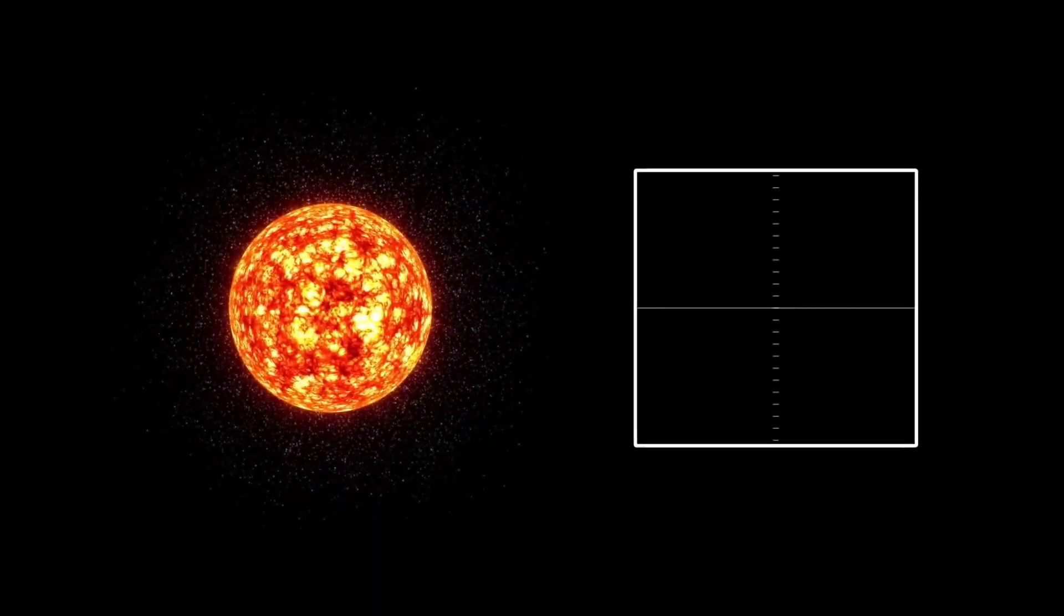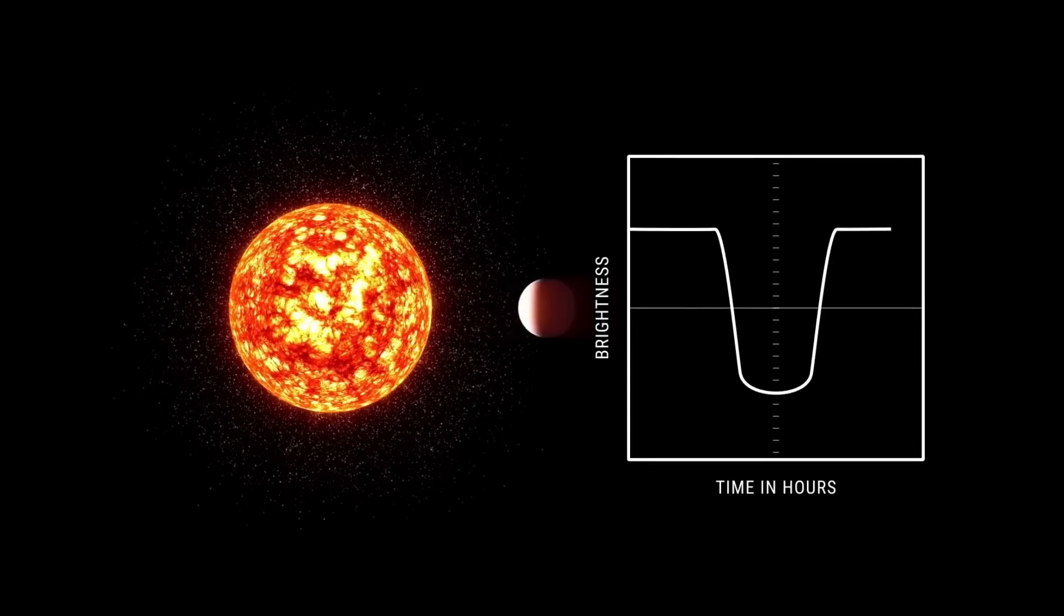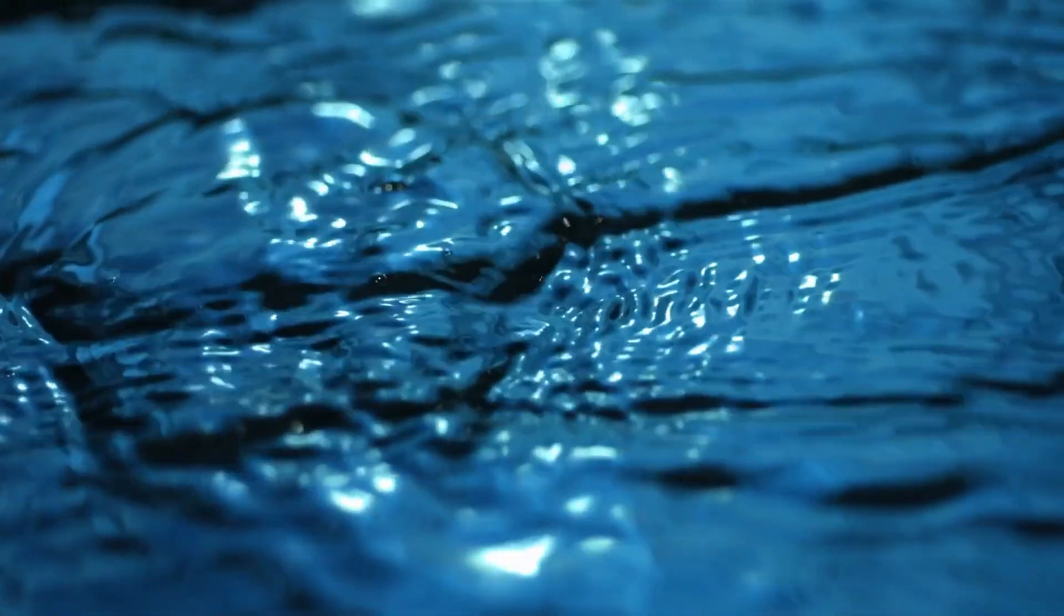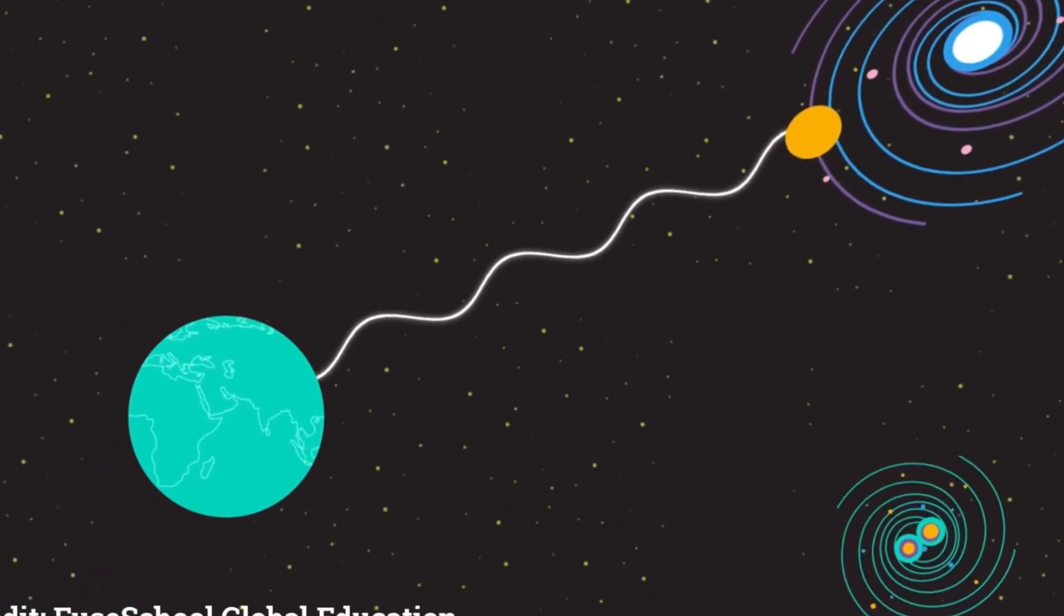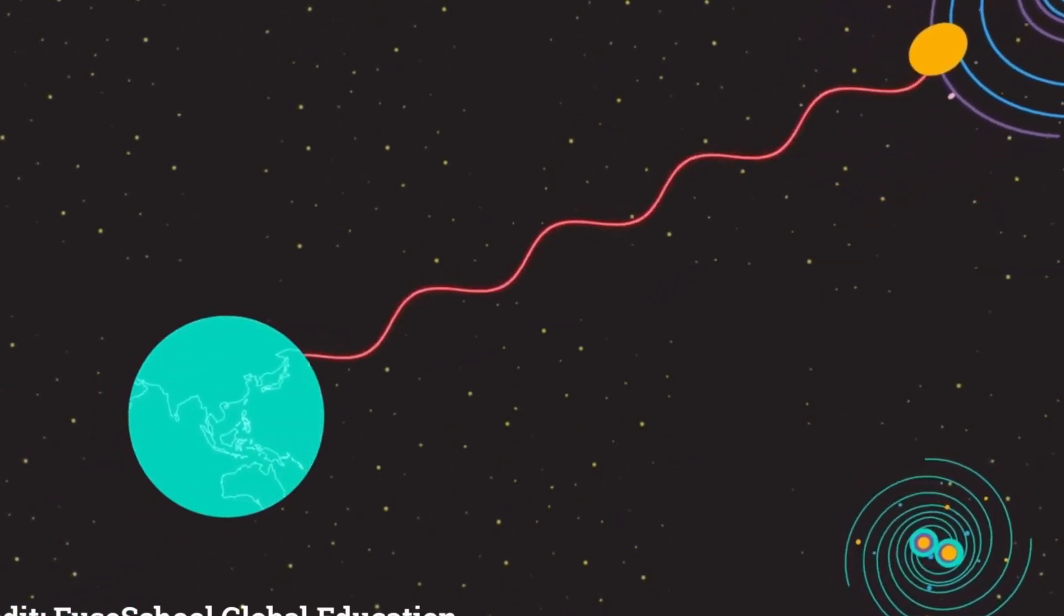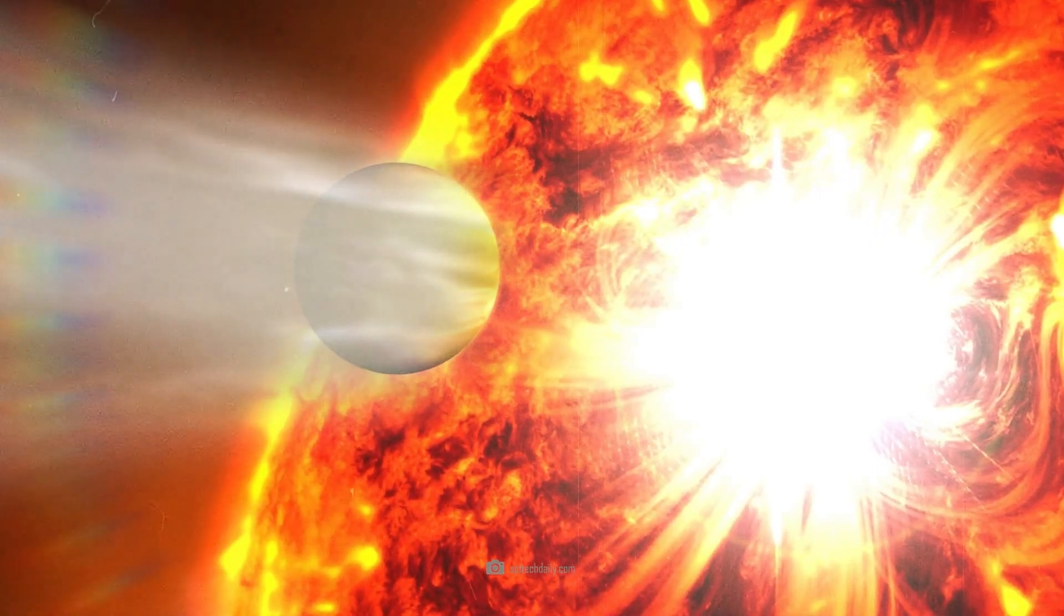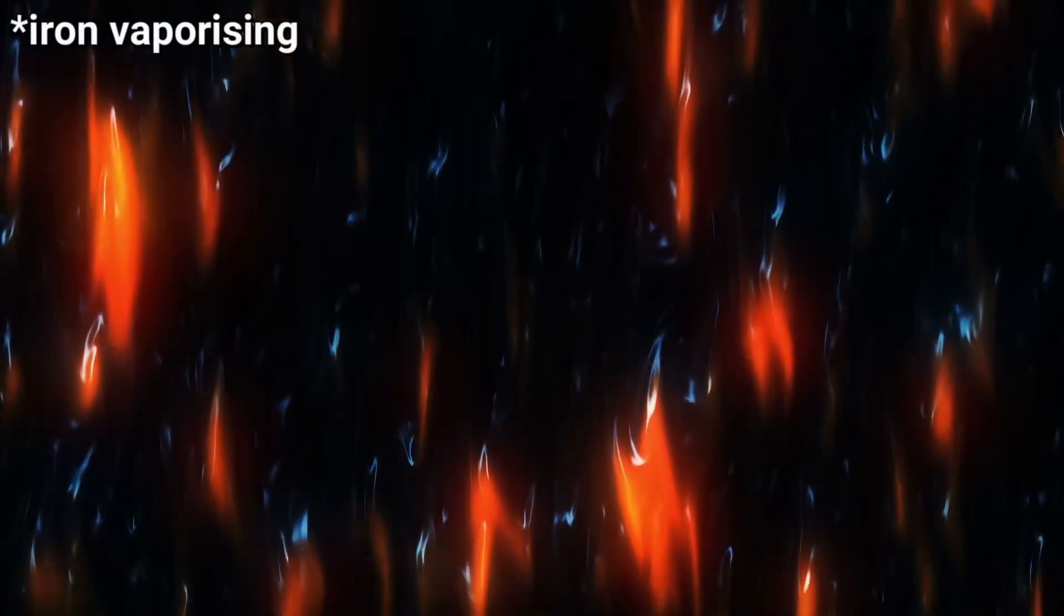HD189733b belongs to a class of hot Jupiters. Hot Jupiters are gaseous giant planets that are extremely close to their parent star, making them the hottest and most extreme exoplanets. At a distance, the real appearance of HD189733b could be deceiving, as it has a blue hue caused by the scattering of light in its atmosphere, similar to the mechanism that makes the sky on our Earth appear blue. Initial measurements have shown that this planet also has water, or at least moisture, in its atmosphere. But then, the similarities with lovely water worlds or our Earth come to an end.